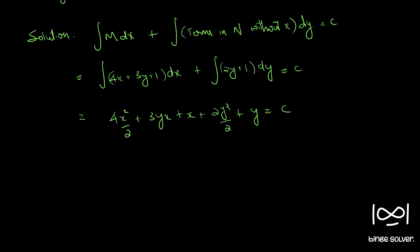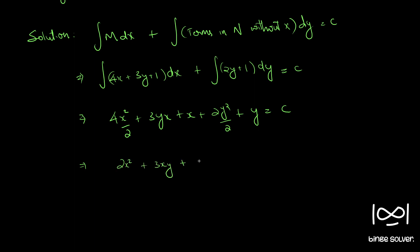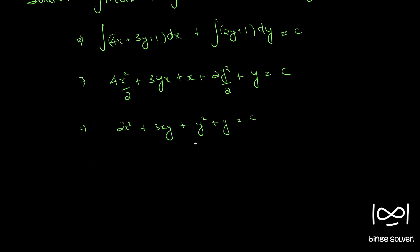Simplifying, we have 2x squared plus 3xy plus y squared plus x plus y equals c. So this is our solution.